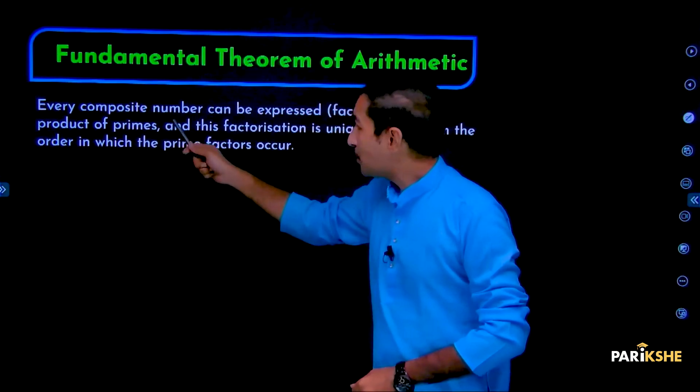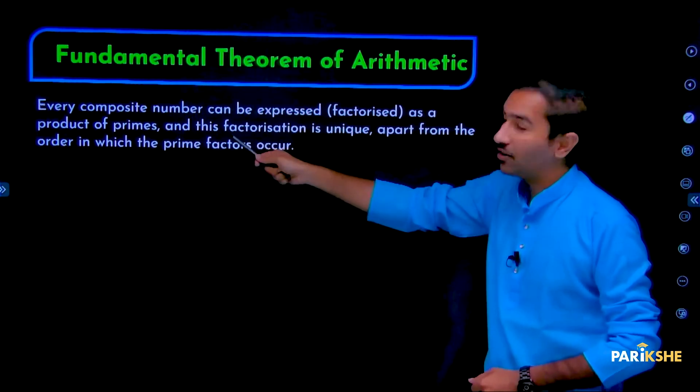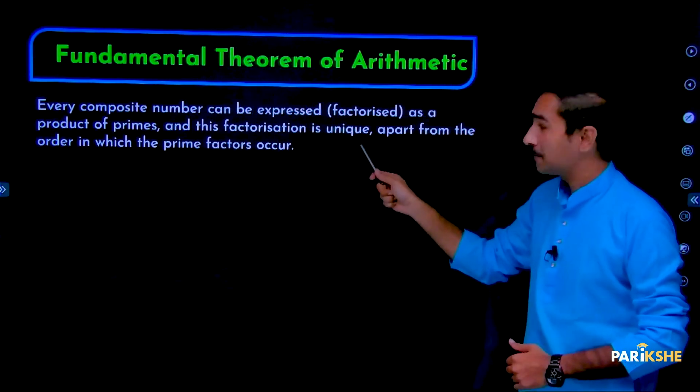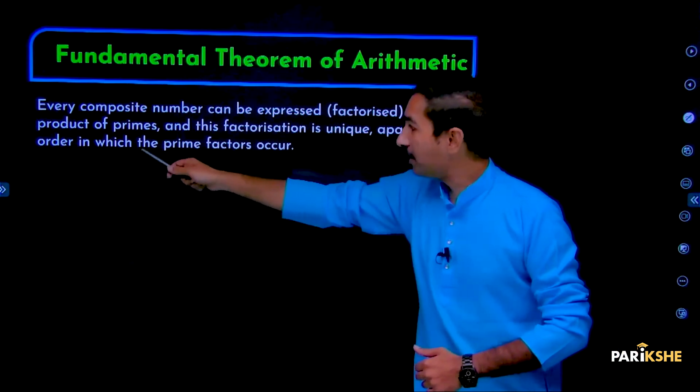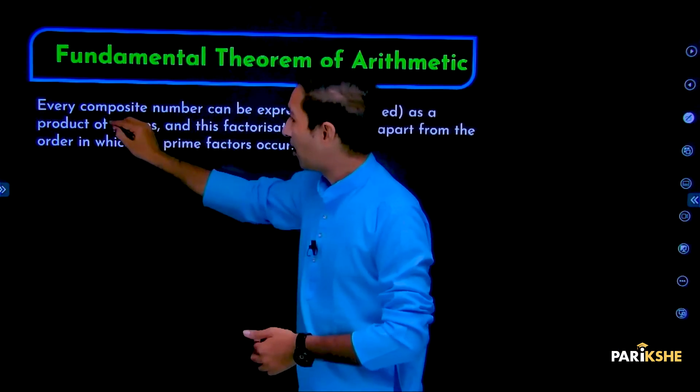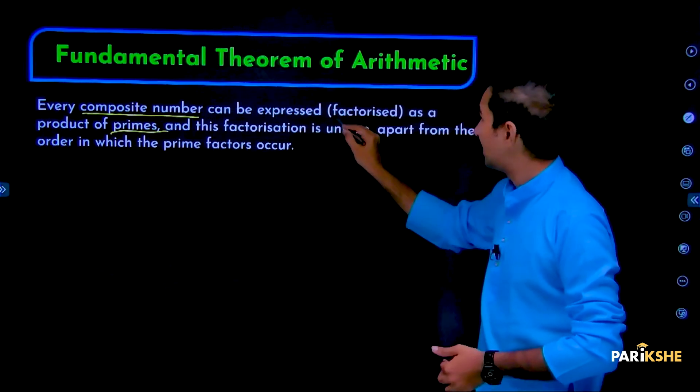Every composite number can be expressed or factorized as a product of primes, and this factorization is unique apart from the order in which the prime factors occur. Let me explain what composite numbers are, what primes are, and what factorization means.